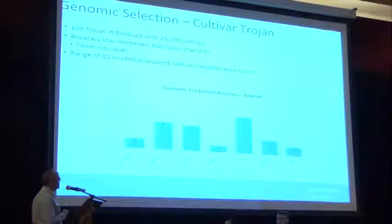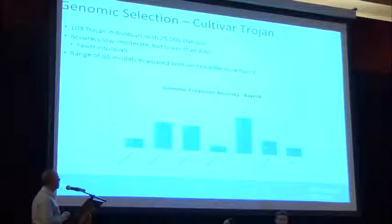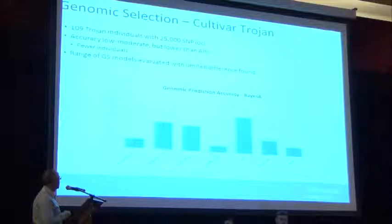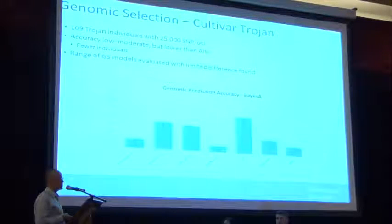A very similar story was found in cultivar Arthrogens, though with fewer individuals — about 109. We still achieved reasonable accuracies across various traits, with a couple somewhat lower, which is likely a function of having roughly half the number of individuals in the reference population.